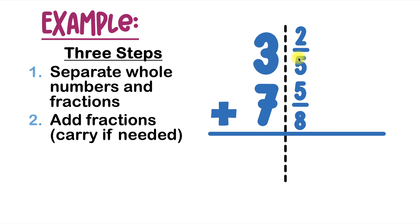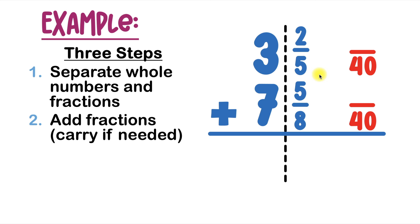Our first fraction is two fifths and our second fraction is five eighths. Because they're unlike fractions — fractions with different denominators — we're going to have to find the LCD, which stands for least common denominator. The least common denominator is just the least common multiple for the denominators. In our first fraction the denominator is 5, and in our second fraction the denominator is 8. The least common multiple for 5 and 8 is 40.